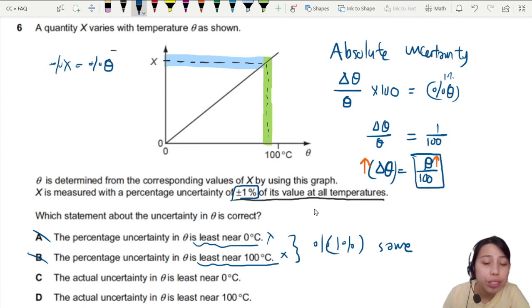So then I will say the actual uncertainty is the least near zero, because near 100, your actual uncertainty, absolute uncertainty is large, very large, because you are multiplying by percent, large percentage. So that's how you can check this value.